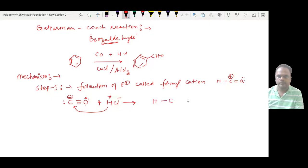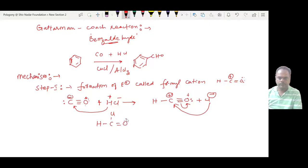This forms HC≡O+. Then the pi bond moves to the oxygen, giving carbon a positive charge. The Cl- from HCl is added to this carbon, forming HC(=O)Cl. This is called formyl chloride.